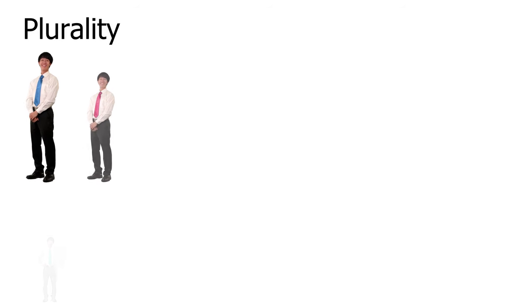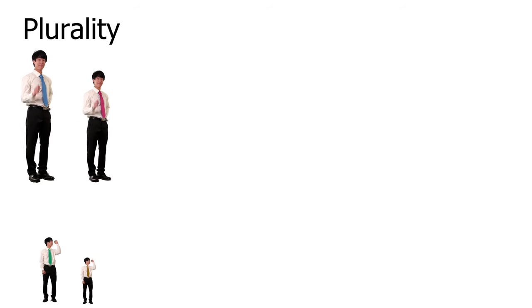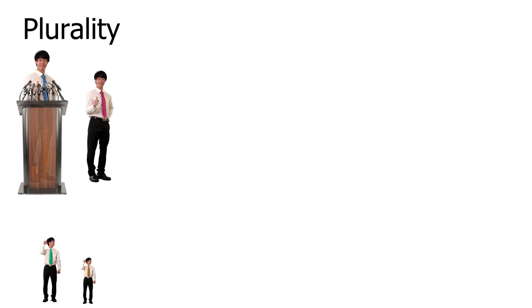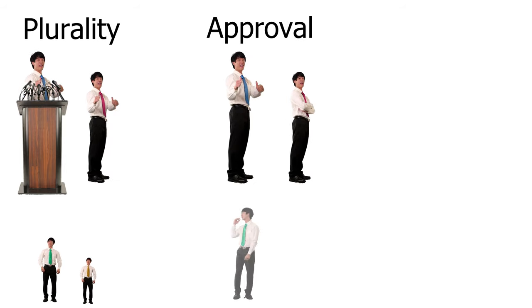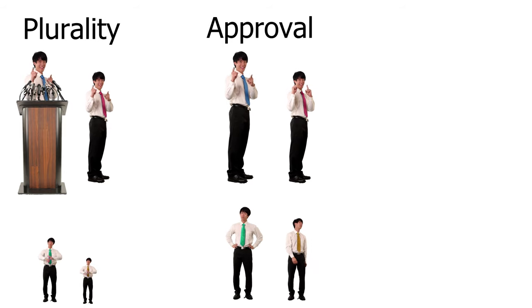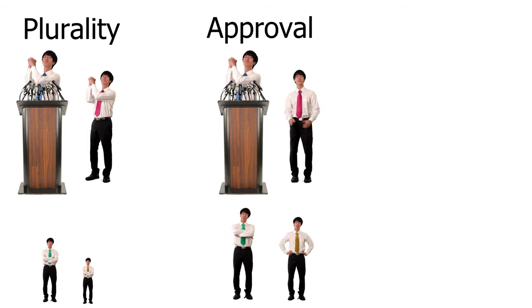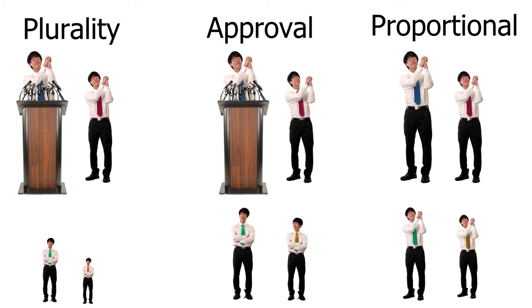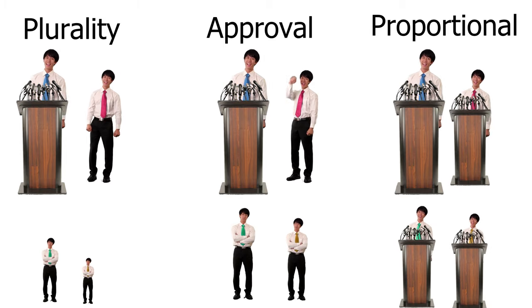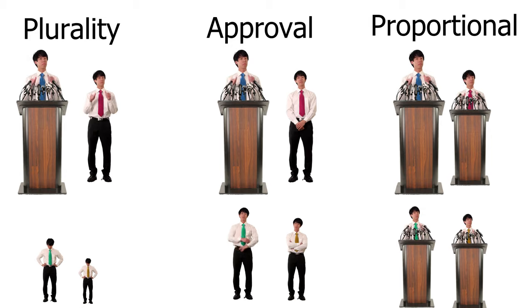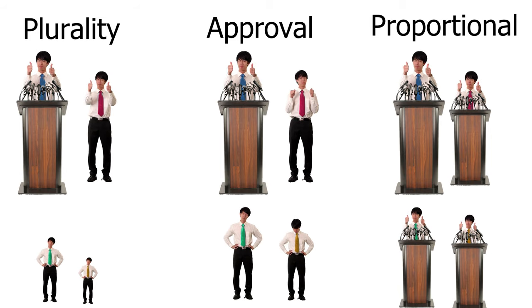Let's recap. In winner-takes-all districts, plurality voting is difficult to win for third parties, discourages voting for smaller parties, and rarely has minority representation. Approval voting lets you vote for multiple candidates, properly reflecting third-party support, but it is still winner-takes-all. Proportional representation solves those problems by both lowering the threshold for seats and encouraging more honest voting — that combination provides representation for smaller parties.